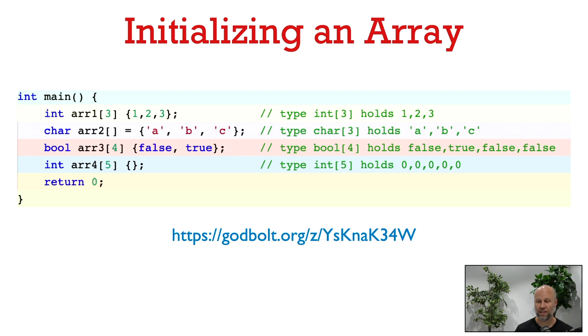For example, when we say bool arr[4] {false, true}, we only give two initial values, but the size of the array is four. So the third and fourth elements of the array are just going to default to false. So the array is going to have false, true, false, false. And if we don't put anything in the brackets at all, then the entire array will be zero-initialized.